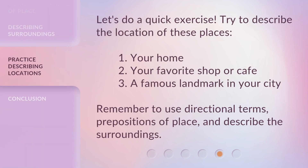Let's do a quick exercise. Try to describe the location of these places: 1. Your home. 2. Your favorite shop or cafe. 3. A famous landmark in your city. Remember to use directional terms, prepositions of place, and describe the surroundings.